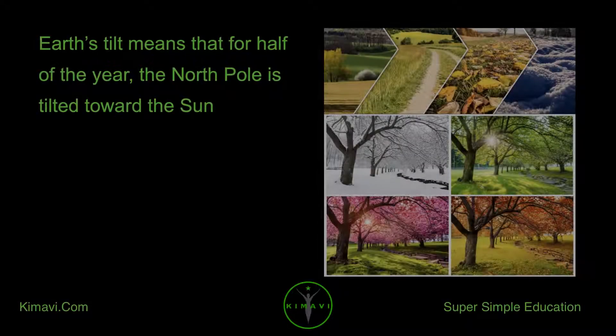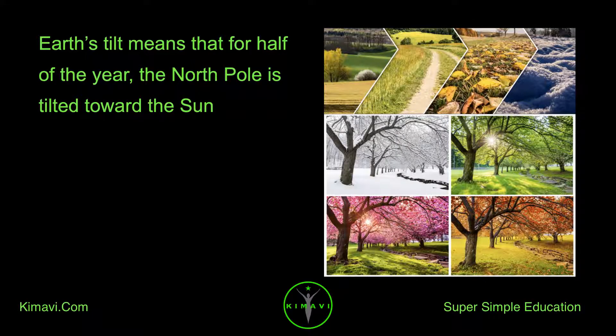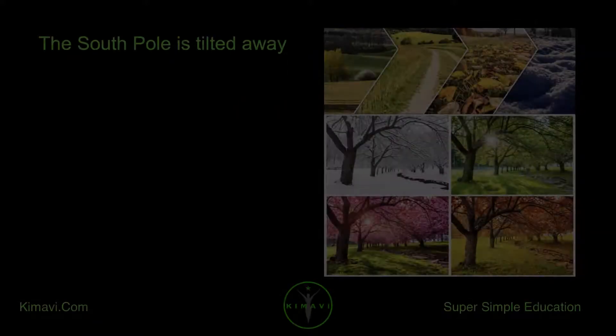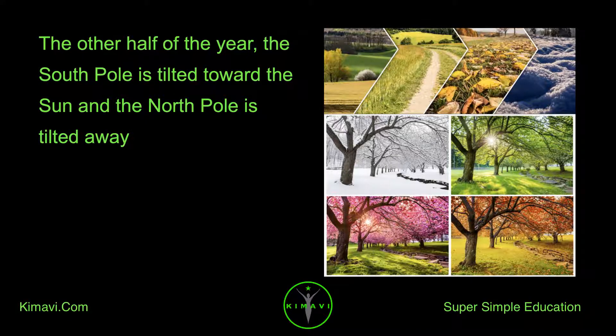Earth's tilt means that for half of the year, the North Pole is tilted toward the Sun. The South Pole is tilted away. The other half of the year, the South Pole is tilted toward the Sun and the North Pole is tilted away.